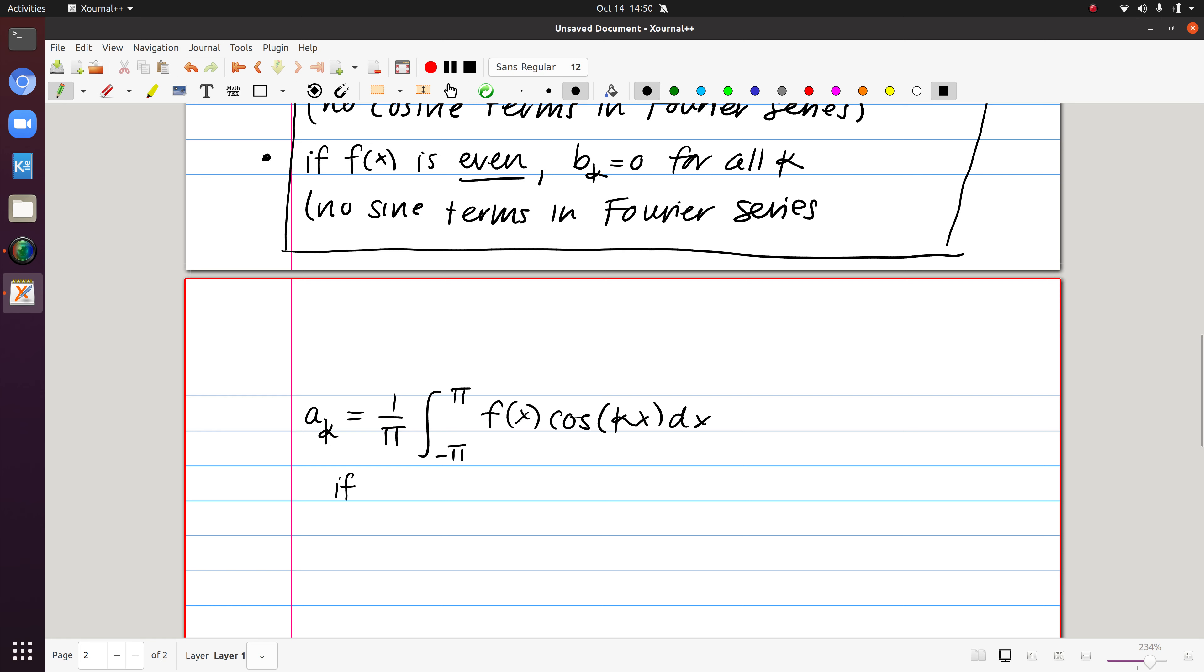Now, if we know that f is odd, remember that cosine is even. Then f times cosine would be an odd function times an even function,